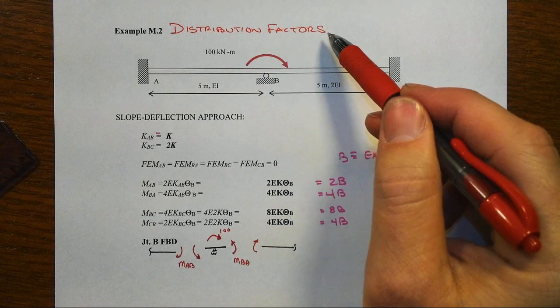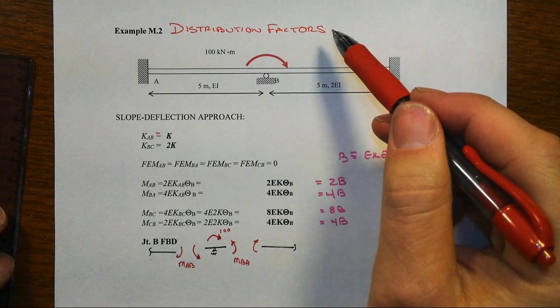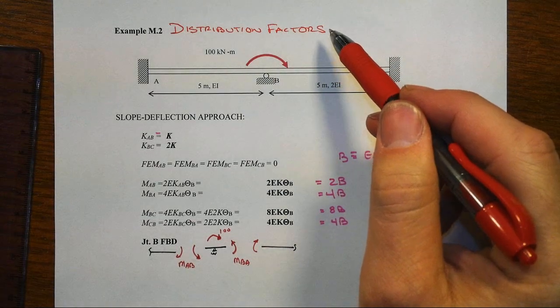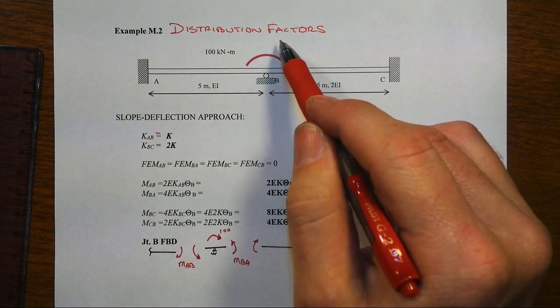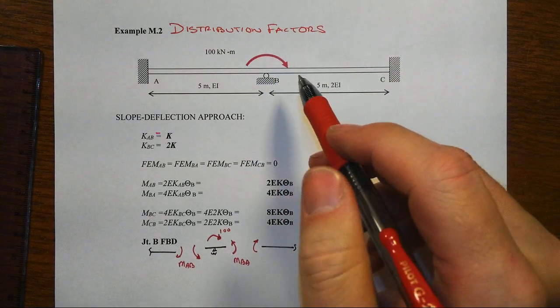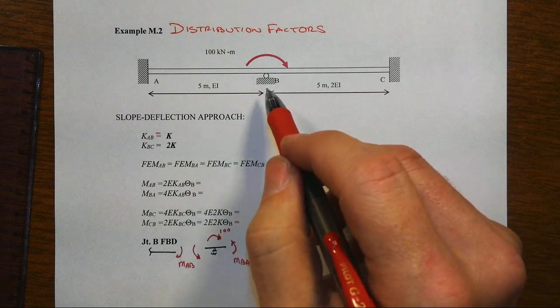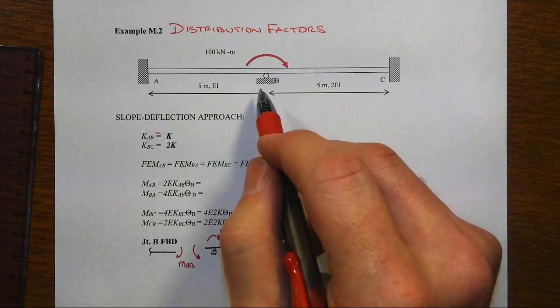This is probably one of the most important aspects of why we still teach moment distribution, is to understand the impact of the relative stiffness of members that frame into our system, and particularly frame into a joint.